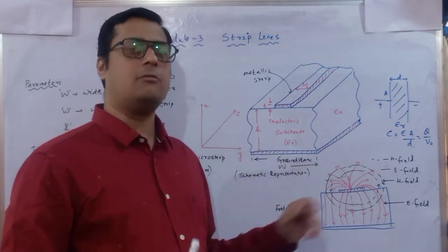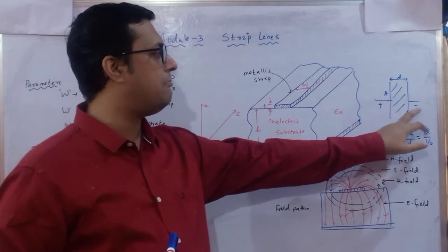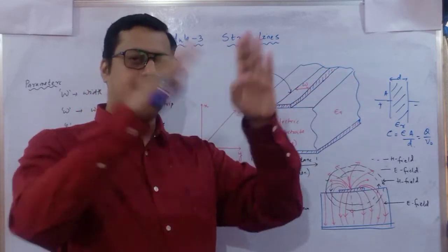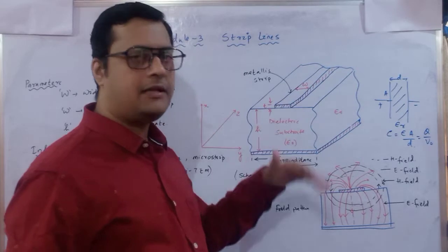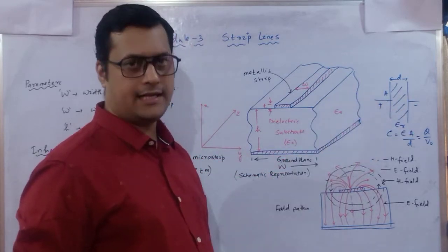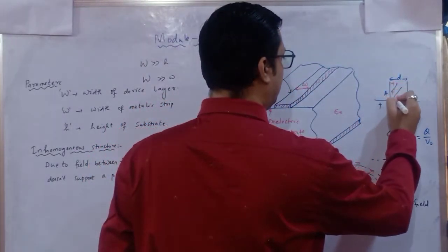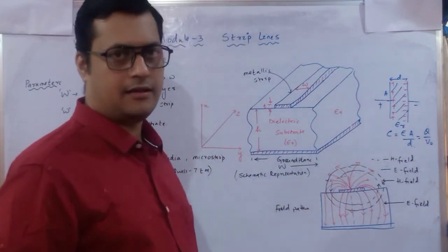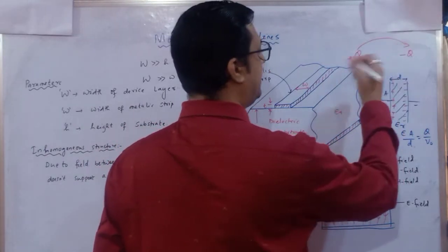The ground plane is a thin layer placed below the substrate, acting as a support and negative plate. Positive charge is distributed on the upper plate and negative charge on the ground plane, so radiation goes from positive to negative. When the metallic plate is connected to positive and ground to negative terminal, the charge distributes accordingly.